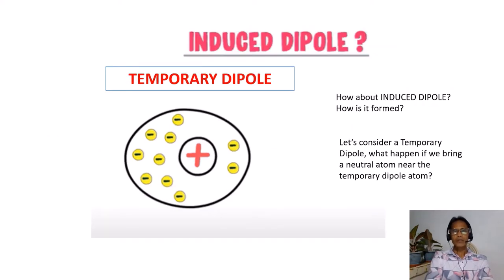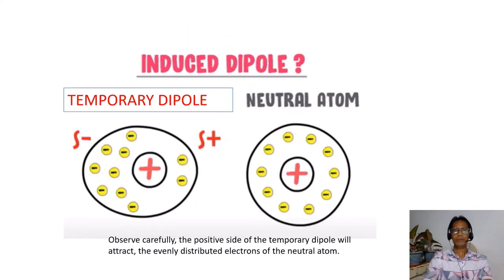How about an induced dipole? How is it formed? Let's consider a temporary dipole. What happens if we bring a neutral atom near the temporary dipole? Observe carefully. The positive side of the temporary dipole will attract the evenly distributed electrons of the neutral atom.